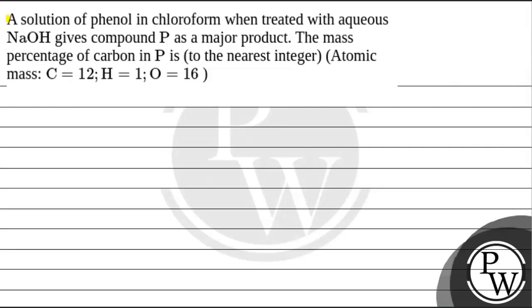Hello. So in this question, a solution of phenol in chloroform when treated with aqueous NaOH gives compound P as a major product. The mass percentage of carbon in P is to the nearest integer, and we have been provided with the atomic masses of carbon, hydrogen, and oxygen.